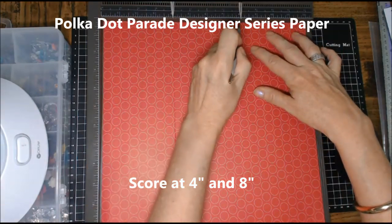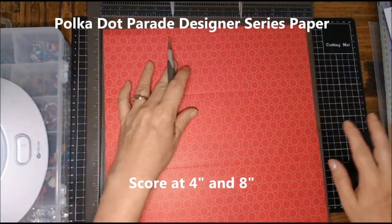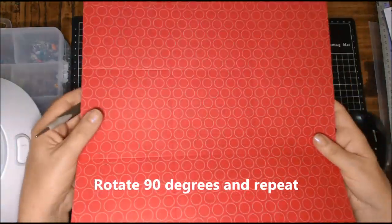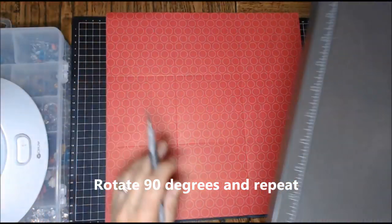Let's get back to our purse now. Using Polka Dot Parade Designer Series Paper, we're going to score it at 4 inches and 8 inches, rotate it 90 degrees and repeat. So you're going to end up with nine squares.